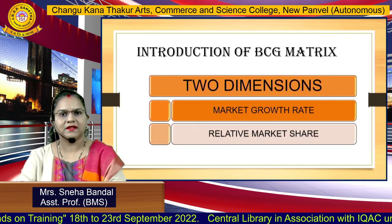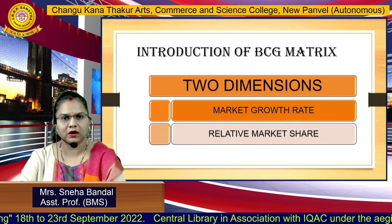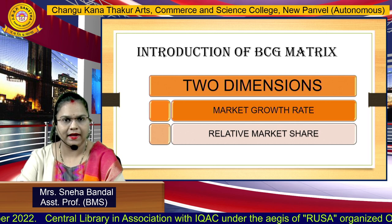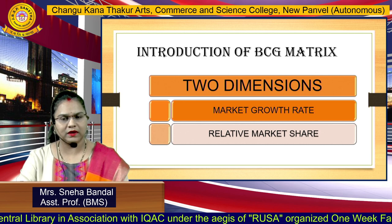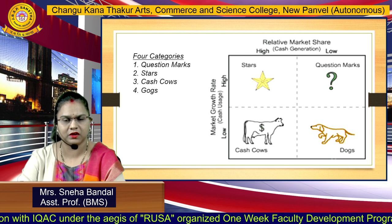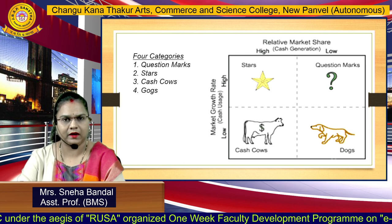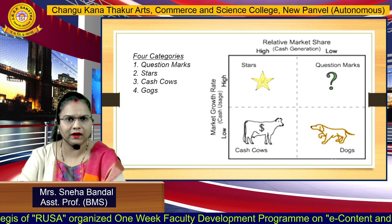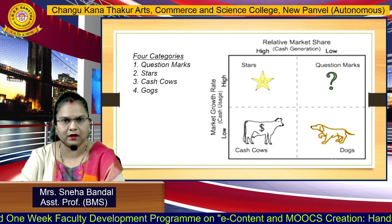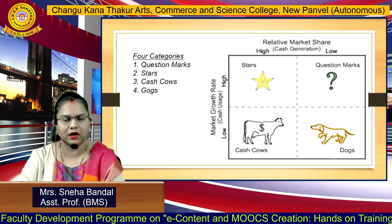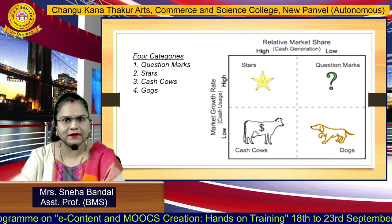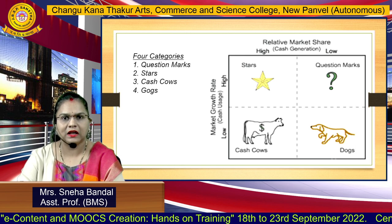On the basis of growth dimensions, this matrix is divided into two dimensions: one is market growth rate and the other is relative market share. It is observed that some products have potentiality, and on the basis of this potentiality, the BCG Matrix divides products into four categories. As you can see on the screen, there is a diagram where four quadrants are represented. The four categories are namely question mark, star, cash cow, and dogs.